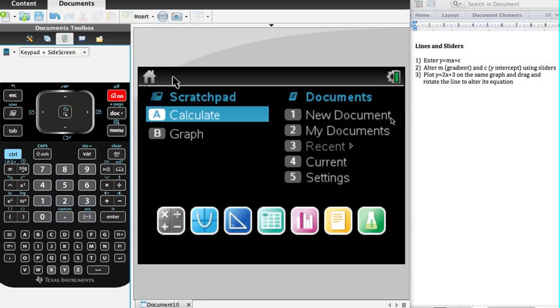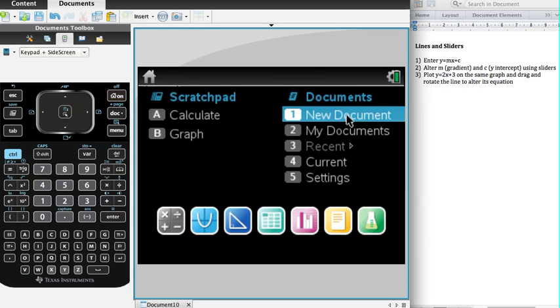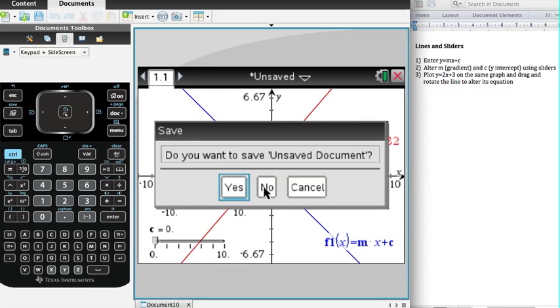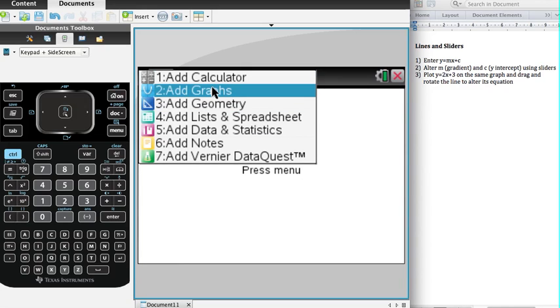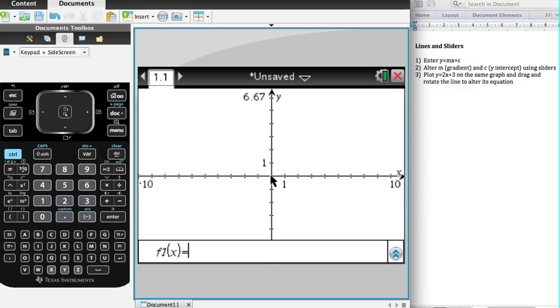To start off with, as always, we need a new document. We don't want to get rid of the old one. We're going to add graphs, so number two, add graphs. And we're going to enter the function m times x plus c. Enter.